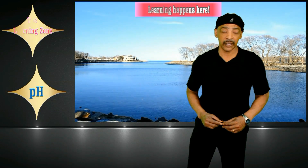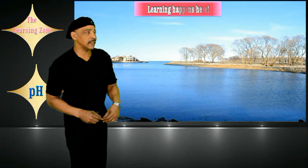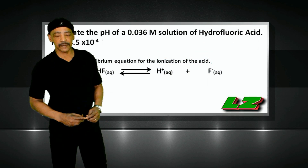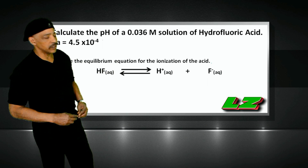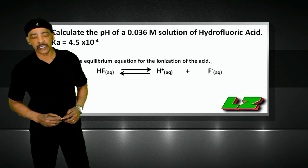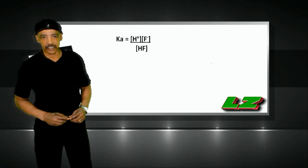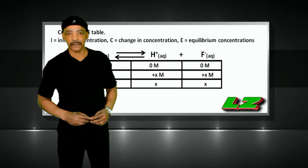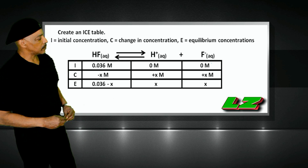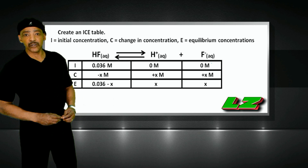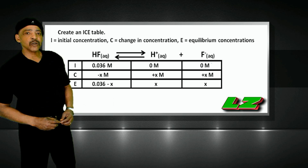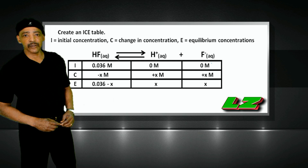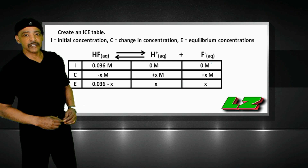This is actually the second of a two-part series explaining how to determine the pH of a weak acid solution. In part one, I determined the pH of a 0.036 molar solution of hydrofluoric acid using a standard calculation, where the first step was to write the equilibrium equation. From the equilibrium equation, I wrote a Ka expression, and then used an ICE table. At equilibrium, the concentration of hydrofluoric acid was found to be 0.036 minus X, and the concentrations of both H-plus and F-minus were determined to be X.